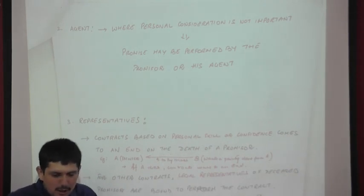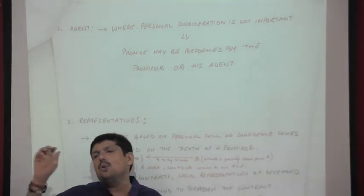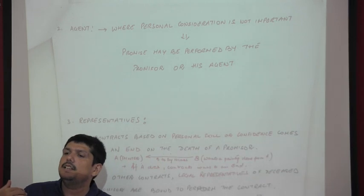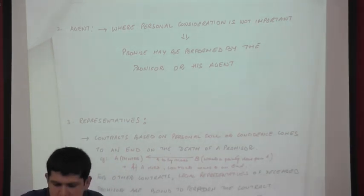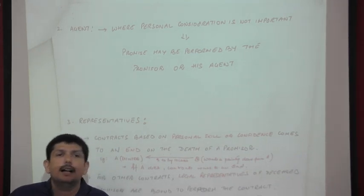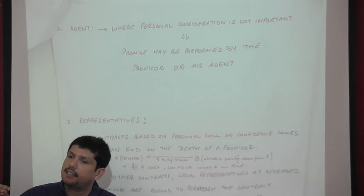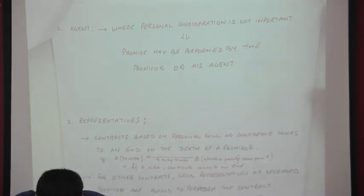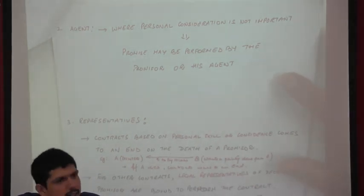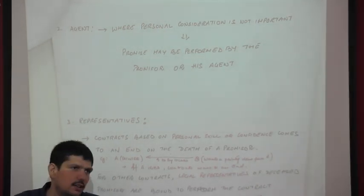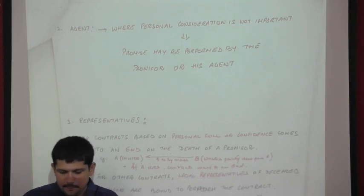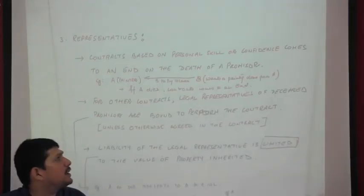Where personal consideration is not important, the promise may be performed by the promisor or through an agent. For example, delivering a car can be done through a driver or agent — there is no personal skill element involved.